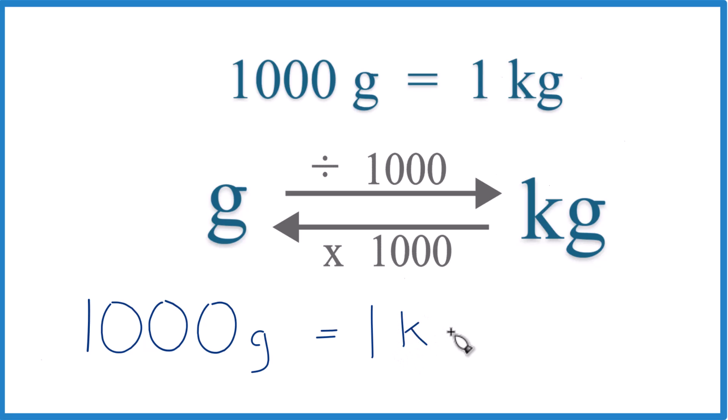So a thousand grams equals one kilogram and you're done. The thing is you have to memorize this. This is the information that you need to memorize in order to be able to convert between grams and kilograms and kilograms back to grams.